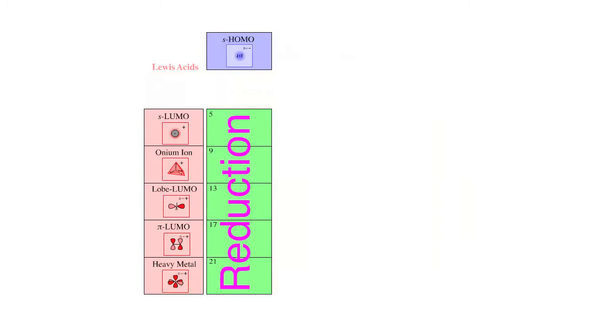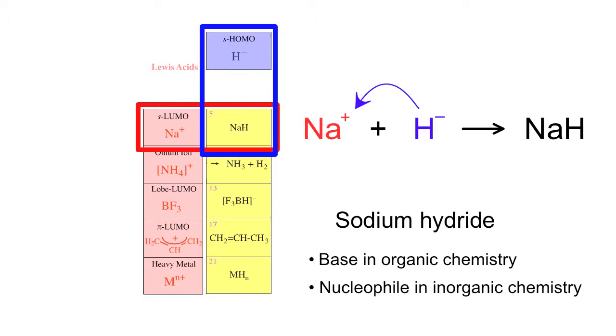Next we're going to look at some reduction chemistry where we're using the S HOMO Lewis bases hydrogen and hydride ion as our Lewis base. For example, sodium cation plus hydride ion gives sodium hydride. Sodium hydride is used as a strong base in organic chemistry and as a nucleophile in inorganic chemistry.